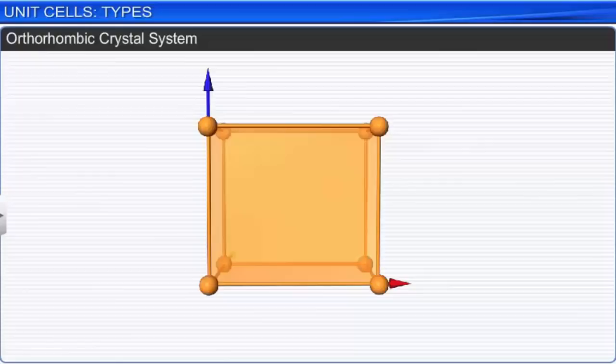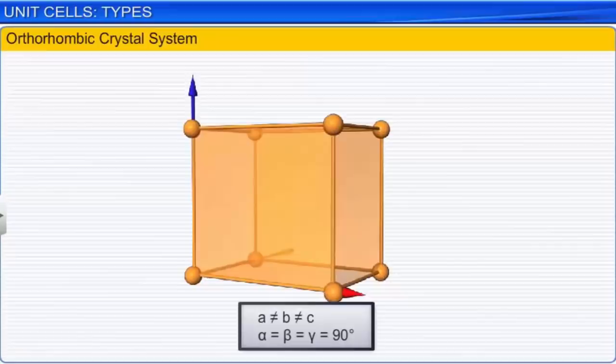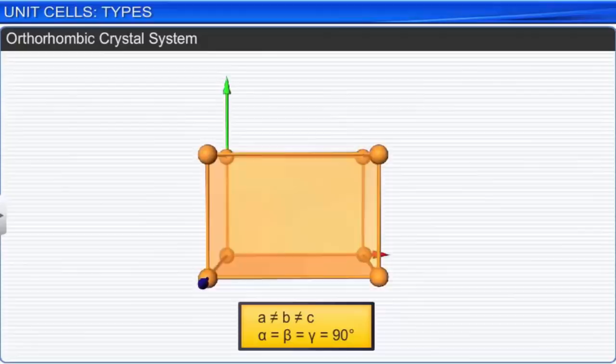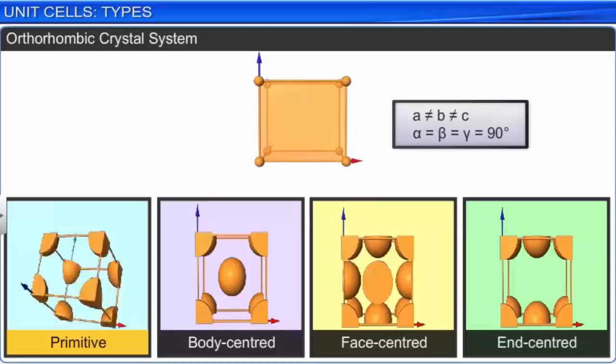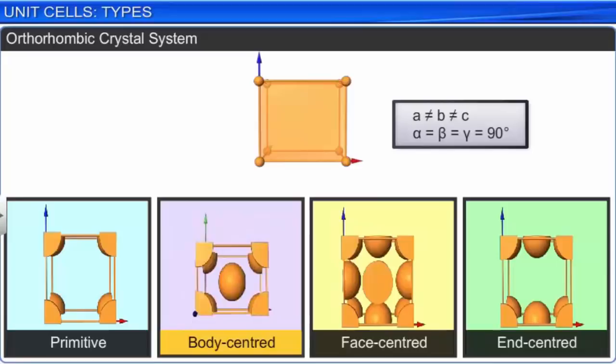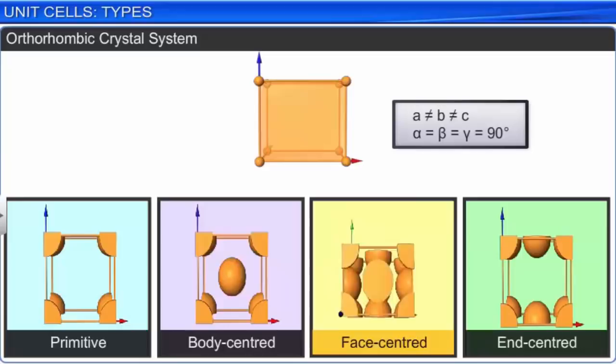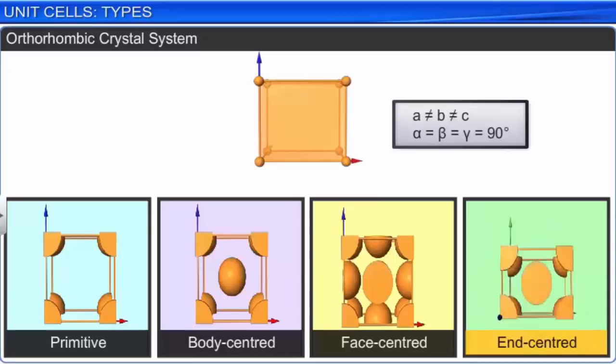In an orthorhombic crystal system, the three axes are unequal but all are at right angles to each other. The possible lattices are primitive, body-centered, face-centered, and end-centered. Rhombic sulfur, potassium nitrate, and barium sulfate are examples.